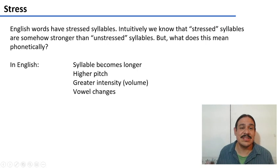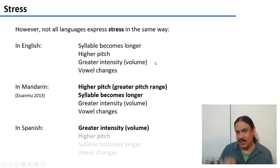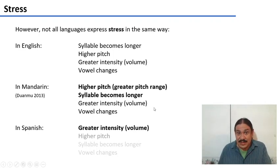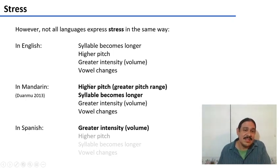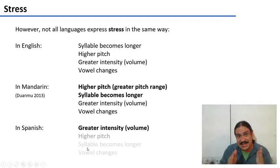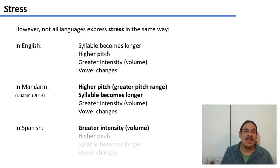In English, syllable length is the main thing we focus on when producing a stressed syllable. However, this is not true for all languages — different languages use different cues with different priorities. For example, in Mandarin the main cue for stress is pitch. In Spanish, you practically don't change the duration of the syllable; all syllables have roughly the same duration — what you change is the intensity or volume of your vowel.